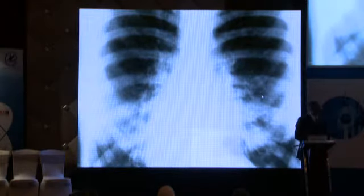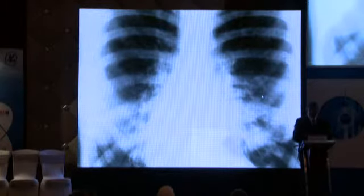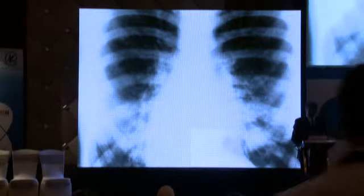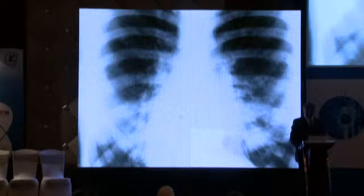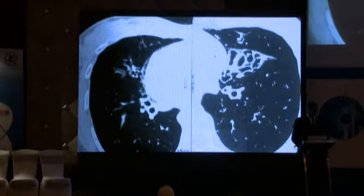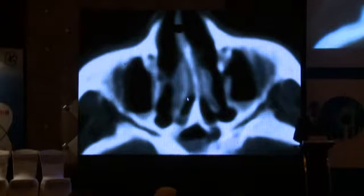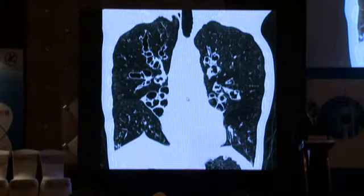Here is a patient I saw when I was a resident back in 1988. The patient has dextrocardia, bronchiectasis in the left middle lobe seen very well on the CT scan, and had atrophic sinusitis. This combination of findings is what we get with the immotile cilia syndrome — the so-called Kartagener's syndrome.